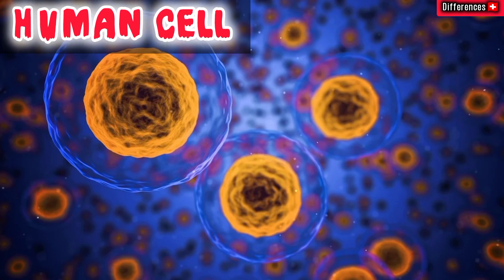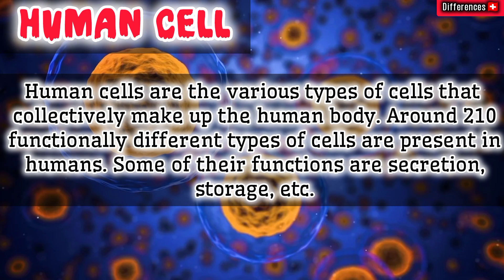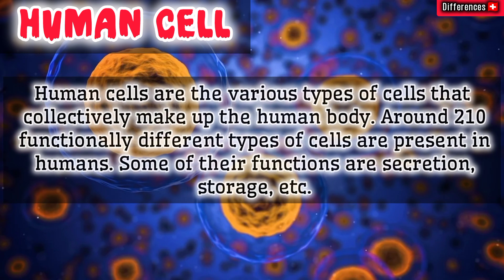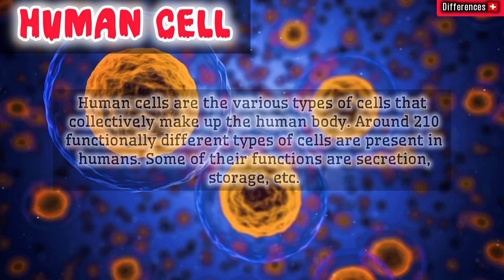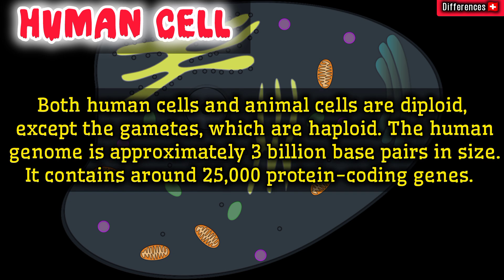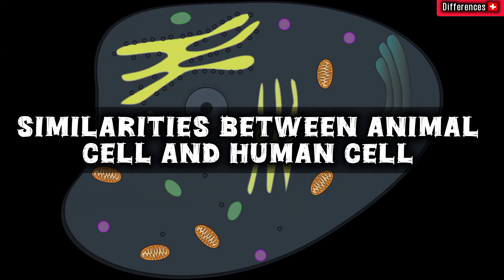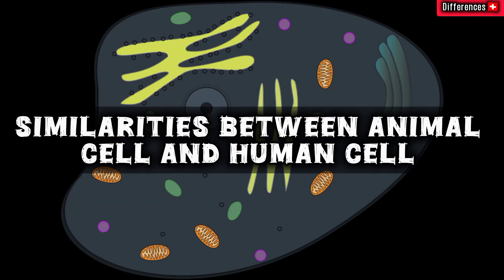What is a human cell? Human cells are the various types of cells that collectively make up the human body. Around 210 functionally different types of cells are present in humans, with functions including secretion and storage. Both human cells and animal cells are diploid, except for gametes which are haploid. The human genome is approximately 3 billion base pairs in size and contains around 25,000 protein-coding genes.